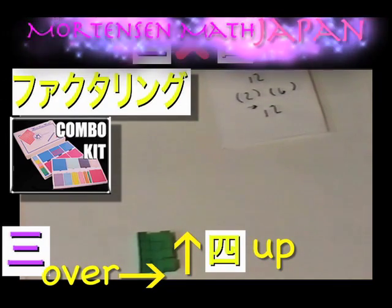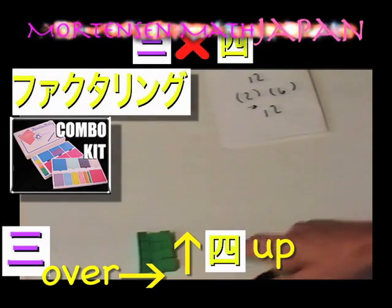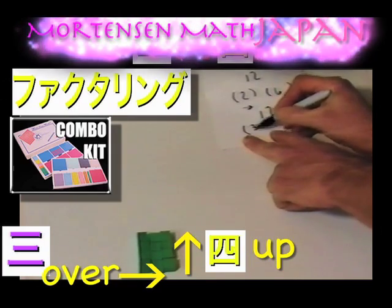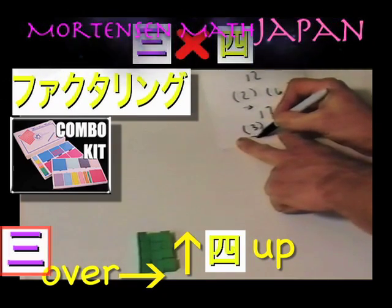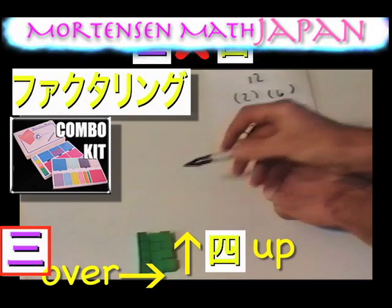What are our factors? Our factors are our distance over, 3, and our distance up, which is 1, 2, 3, 4.